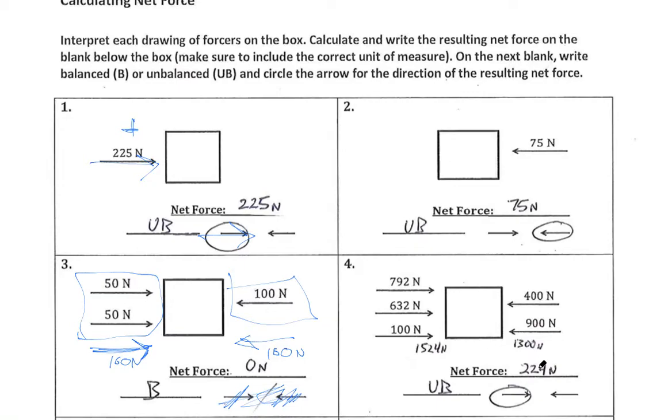Number four, very similar logic to number three. We end up adding up all of our forces on one side, all of the forces on the other. See which one's the winner, so to speak. It looks like I have a net force of 224 newtons. Just subtracting my forces here.